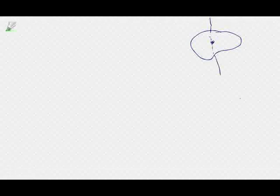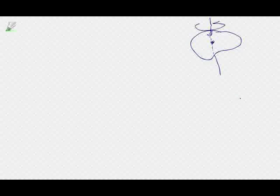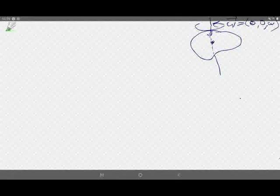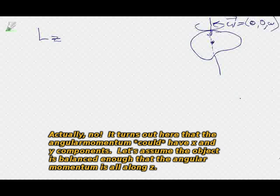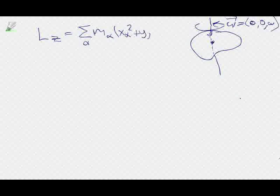Let's look at those products of inertia. I'm going to draw my blob again. Here's the center of mass of that blob, and let's say the blob is rotating — that's an axis through the thing. The blob is rotating at rate omega around the center of mass. This omega vector is equal to (0, 0, omega), so it's rotating around like that. The angular momentum about the z-axis — the z component of angular momentum — is going to be the sum over alpha of m_alpha times (x_alpha squared plus y_alpha squared) times omega.